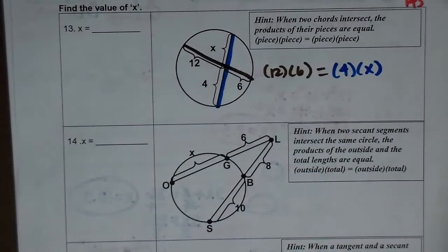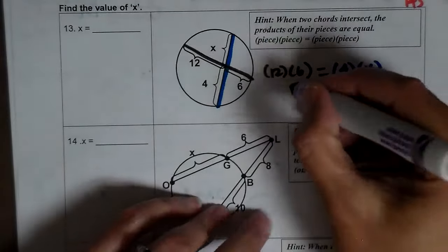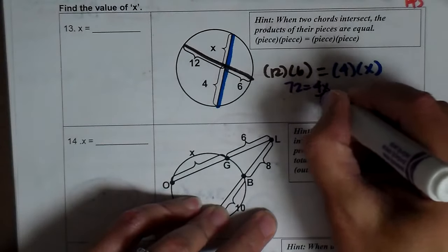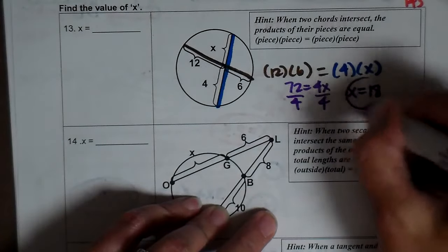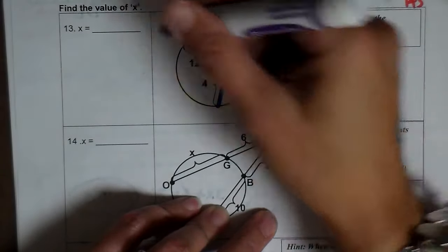So now you're just going to solve it. So 12 times 6 is 72 equals 4x. I divide both sides by 4. And x is equal to 18. So that means that this piece is 18.